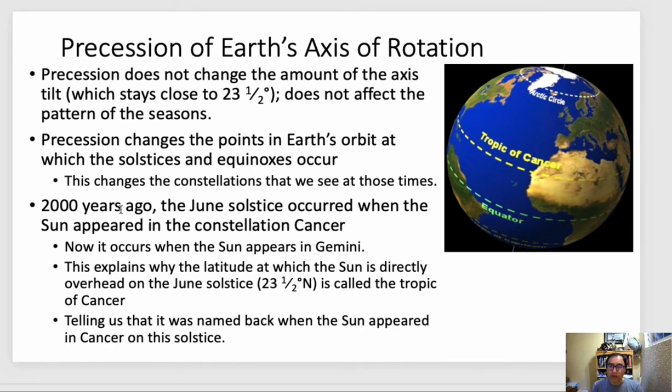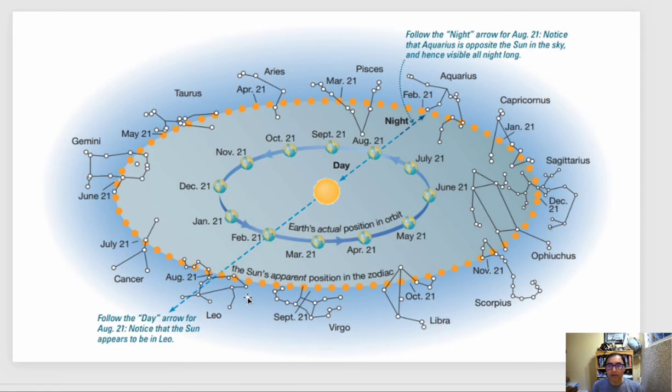So 2,000 years ago, the June solstice occurred when the sun appeared in the constellation Cancer. Now it's in Gemini. But that's why the Tropic of Cancer is called the Tropic of Cancer, because it was named about 2,000 years ago. It was in Cancer, but now you can see it's changing over time. This is where the latitude at which the sun is regularly overhead in June is called the Tropic of Cancer, telling us that it was named back when the sun appeared on that solstice.